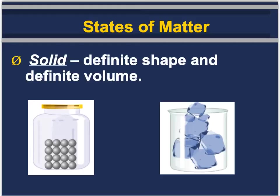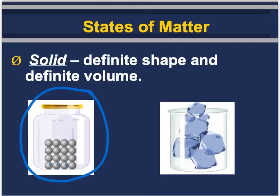There are three different types of states of matter. The first one is a solid, and a solid has a definite shape and a definite volume. If I ask you to make a molecular diagram of what a solid looks like, it's going to look like this — you can see all the different atoms neatly, evenly arranged, close to each other in the jar. An example of a solid is ice.